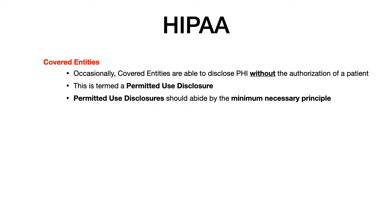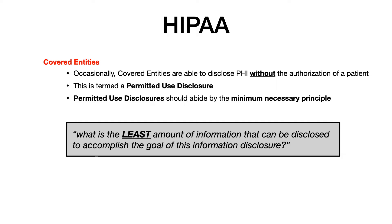Permitted use disclosures must abide by what's known as the minimum necessary principle. This means only the least amount of information necessary to accomplish the goal should be disclosed. For example, if a hospital needs to report that a patient has a communicable and reportable disease, it will do so but will only release the minimum information necessary to accomplish that reporting goal. Essentially, the government is telling covered entities: if you're going to release information without patient authorization, only disclose what's minimally necessary.